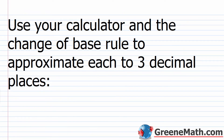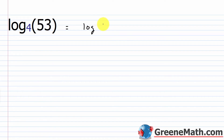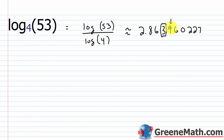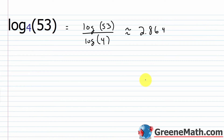Now let's use the calculator and change of base rule to approximate each to three decimal places. For log base 4 of 53, I change the base to get log of 53 over log of 4. My calculator gives me 2.863960227. Looking at the fourth decimal place, the 9 is 5 or greater, so I round up — the third decimal becomes a 4. So this is approximately 2.864.